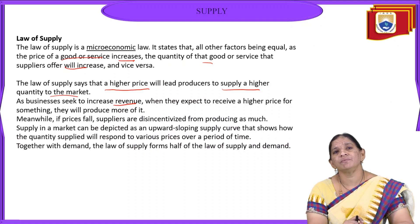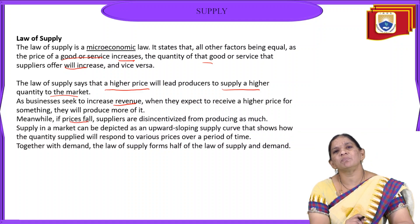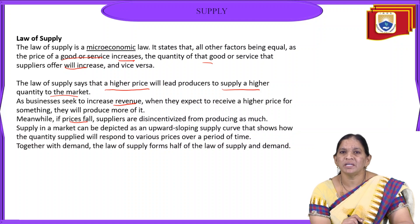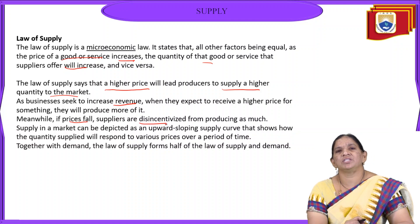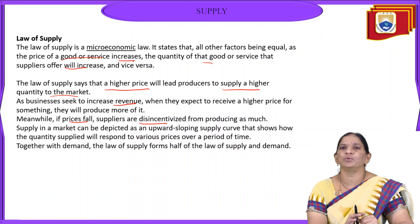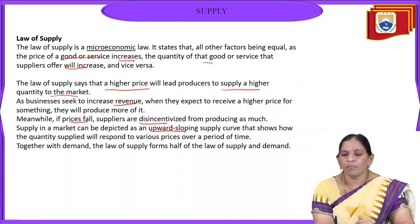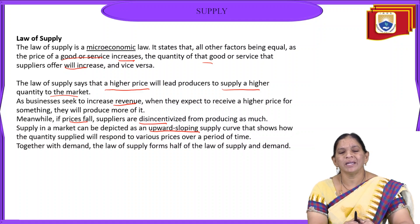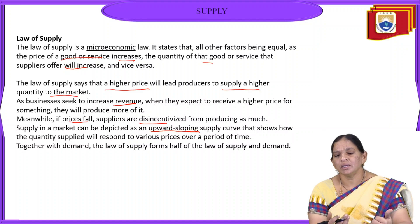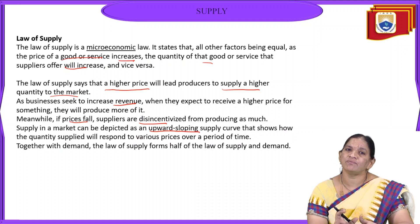But in the situation when prices have fallen, the supplier at a lower price doesn't want to produce or send more goods to the market with little profit. When the price decreases, the supplier is dis-incentivized — he doesn't feel active or motivated to supply or produce more goods into the market. So the supply can be depicted by the upward sloping of the supply curve, which shows that the quantity supplied responds to various prices over a period of time.